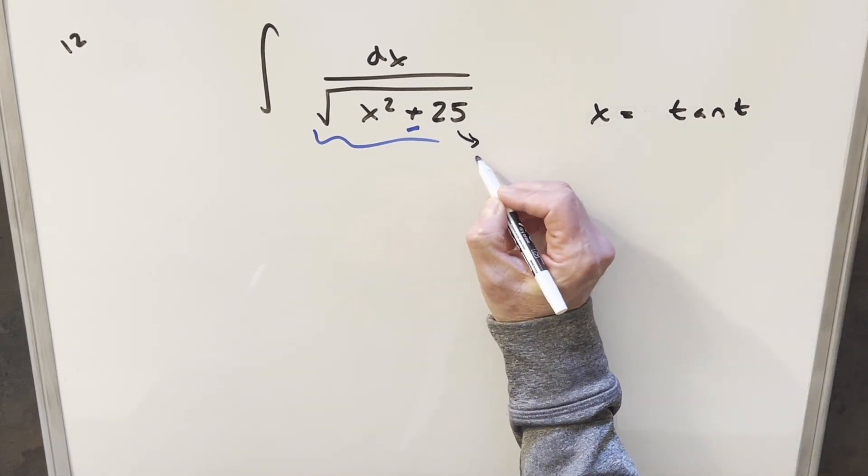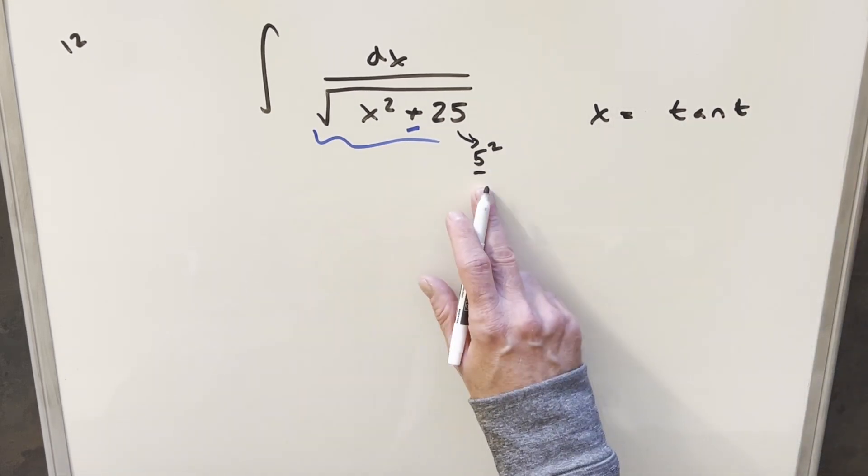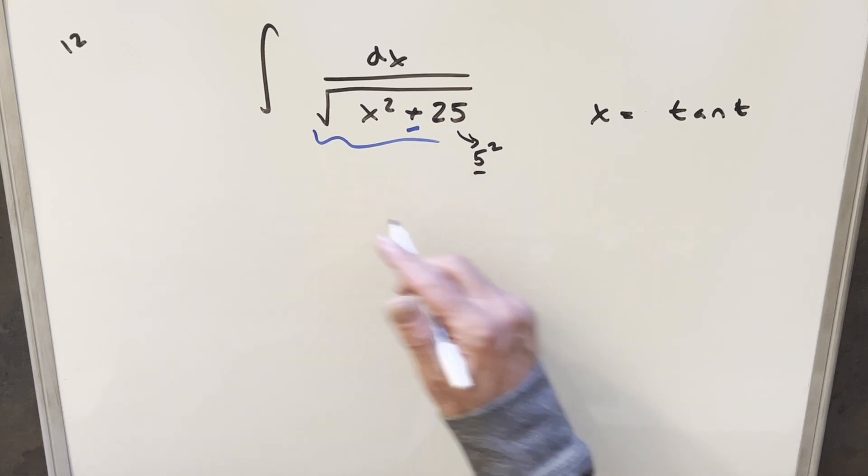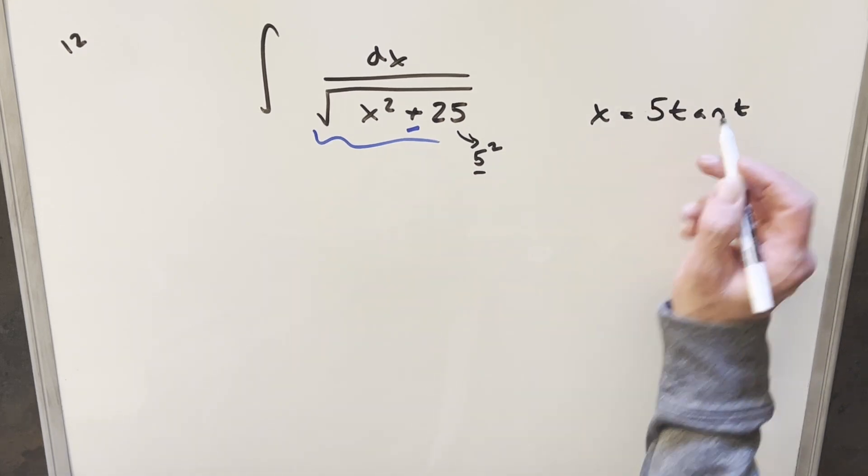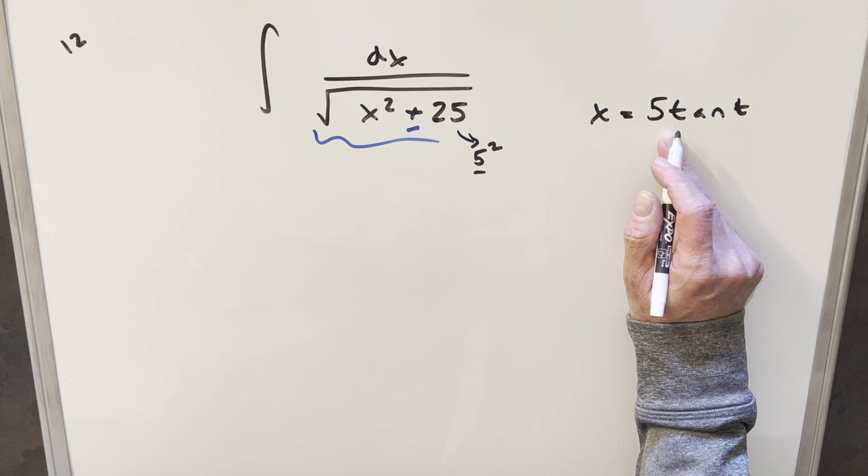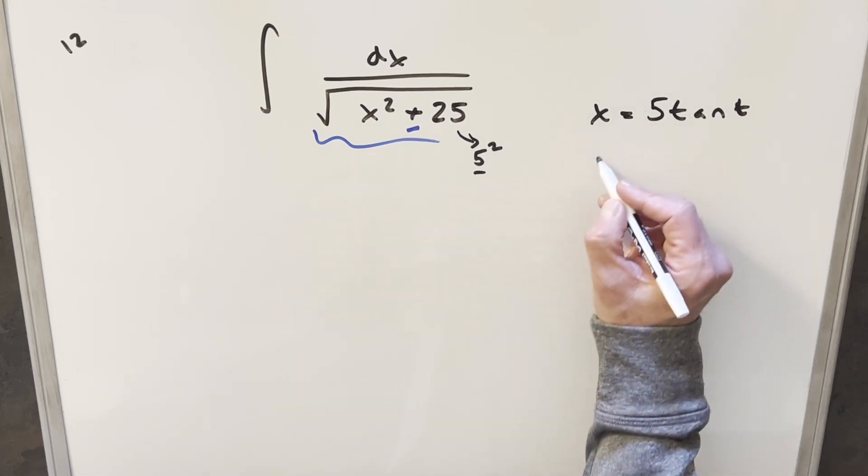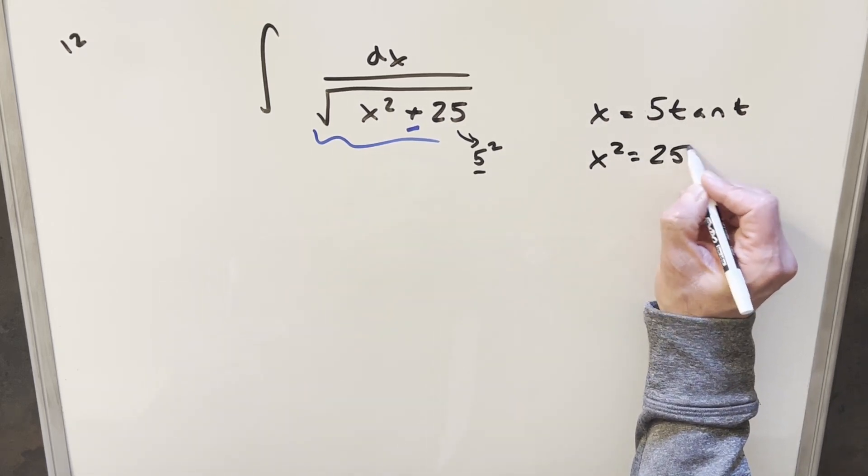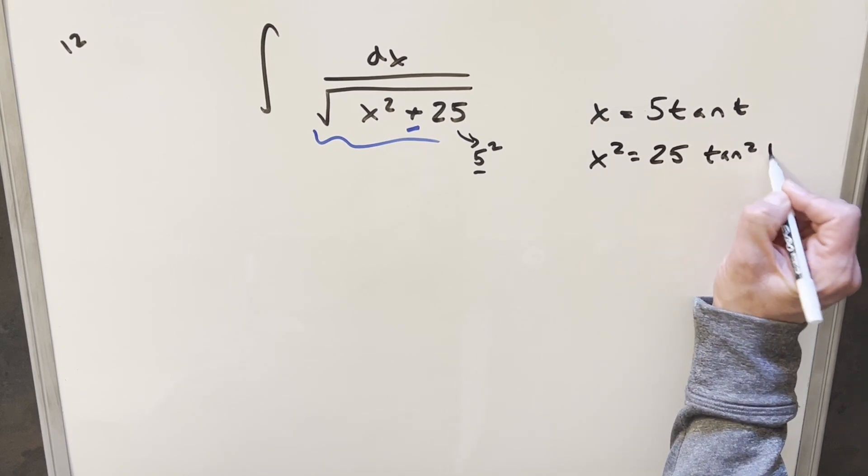But now with this 25 here, we can write this as 5 squared. But what we want to do is incorporate this 5 in order to make this work. So what I can do is instead of doing x equal to tan of t, we'll do x equals 5 tan of t. Just noticing when you square that for x squared, this is going to be 25 tan squared of t.